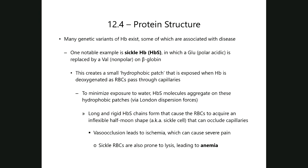As I was mentioning last time, this specific type of hemoglobin has a mutation — a genetic mutation in which a glutamic acid, or glutamate, which is a polar acidic amino acid with a negative charge in its side chain, gets replaced by valine, which is nonpolar and therefore has a zero charge. So when you go from something that's negative to something that's zero, there's been a gain in positive charge in that structure.